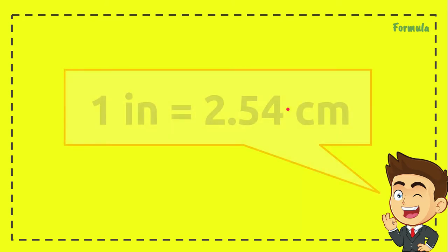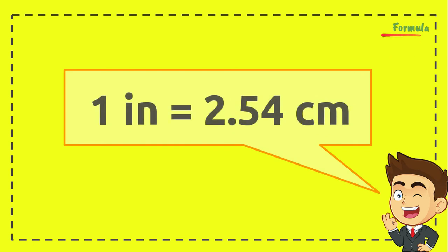In the very first step, before we are solving the problem, we need to know the formula of the conversion or you can call it conversion factor. 1 inch equals 2.54 centimeters. So if you want to convert 1 inch to centimeters, it equals this number.